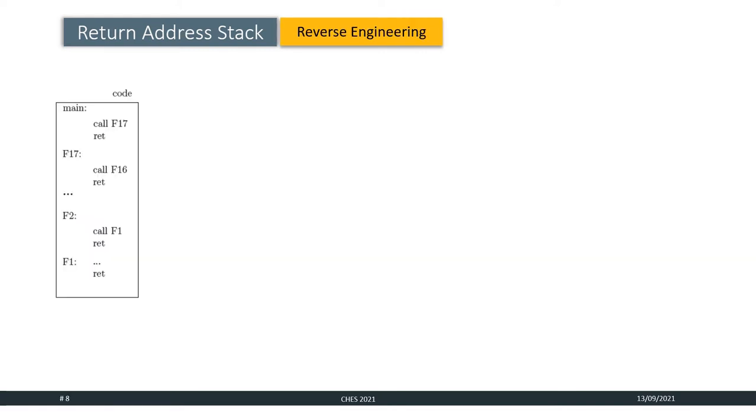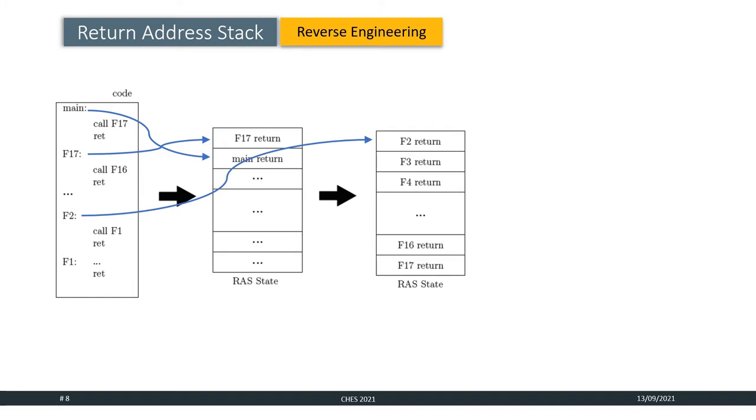To reverse engineer the size of the stack, we devise a simple experiment. We start with an arbitrary number of nested function calls, suppose 17, where the main function calls function f17, which in turn calls function f16 and so on till the deepest function which is f1 here. As per the working principle of RAS, the return address of the main function will be pushed onto the RAS first, followed by the return address of the function f17. Suppose the RAS is the size of 16, so proceeding this way, when the function f2 is called, its return address will also be put at the top of the stack and at this point, the stack will be completely full of all valid entries.